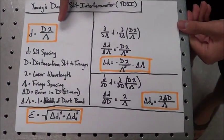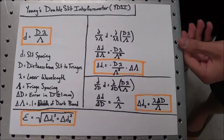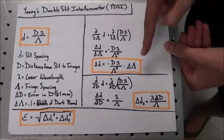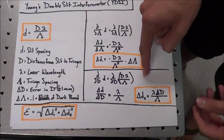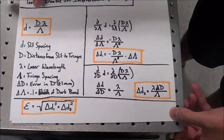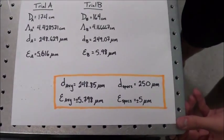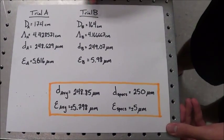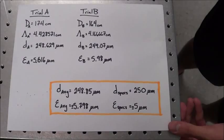We used this equation to calculate the slit spacing. We took the derivative of the slit spacing in terms of the fringe spacing and in terms of the distance from the slit to the fringes in order to calculate the error of our slit spacing. We took our measurements at two different distances and then calculated the average slit spacing and error for both of our trials.